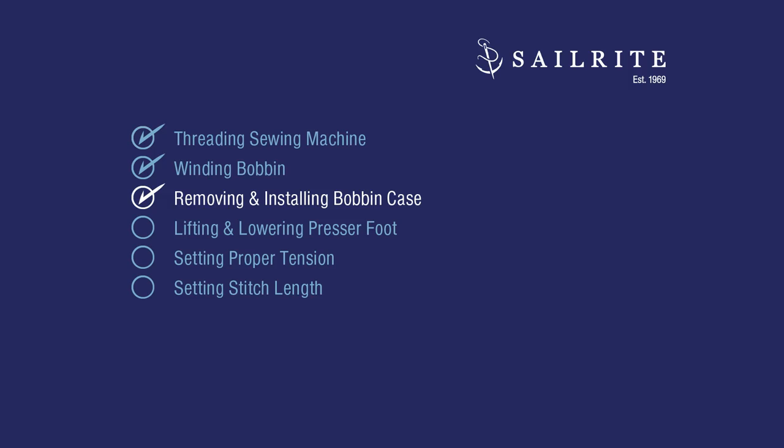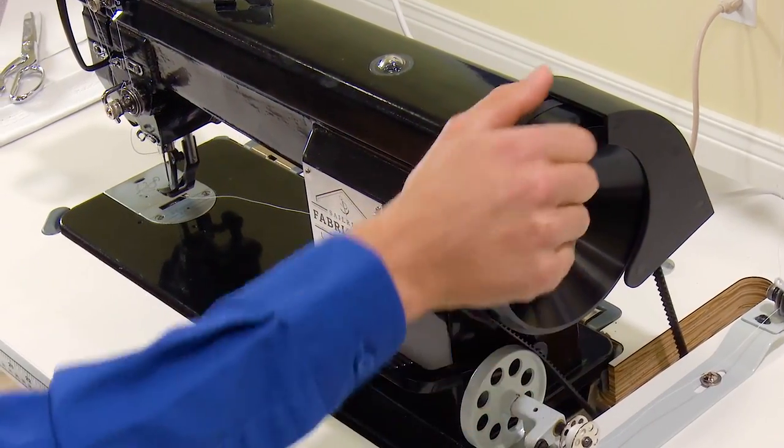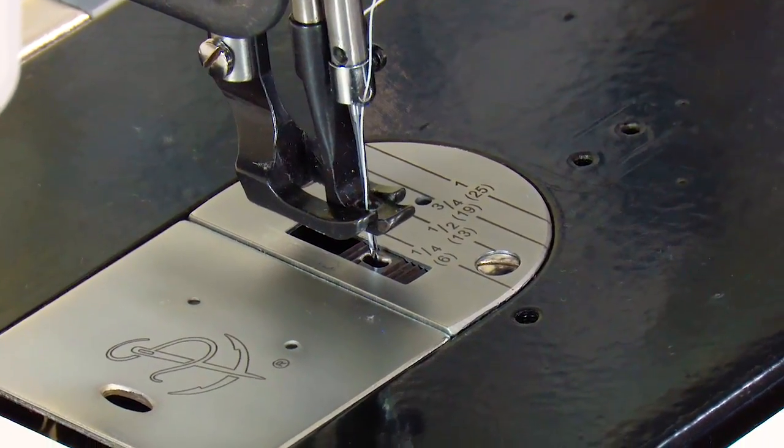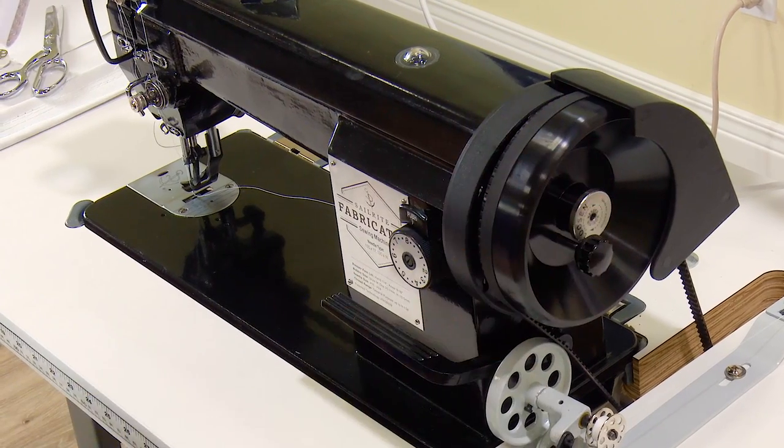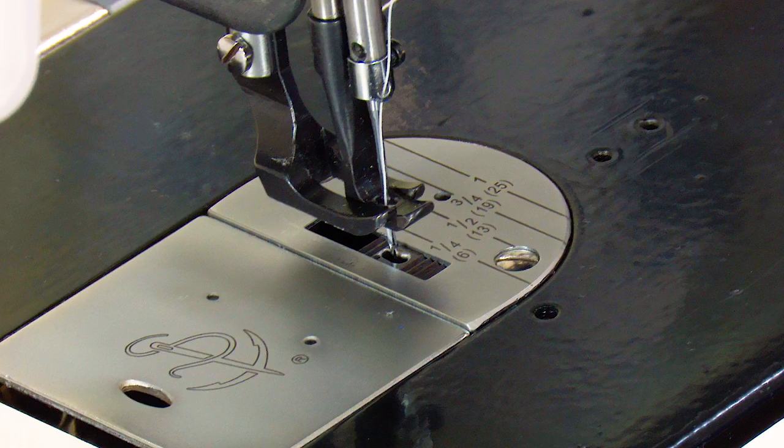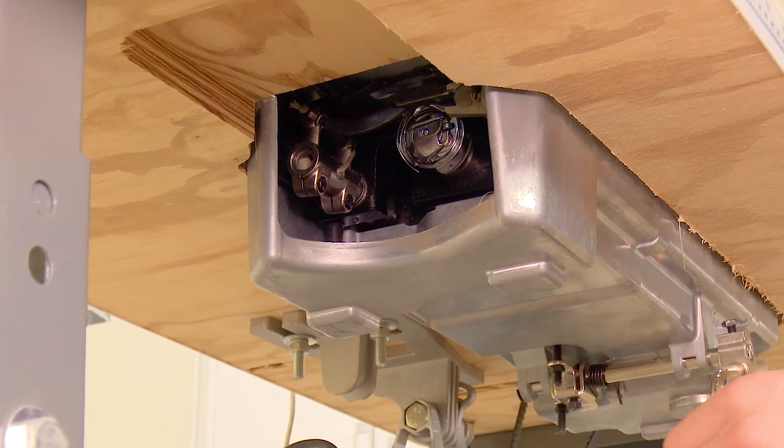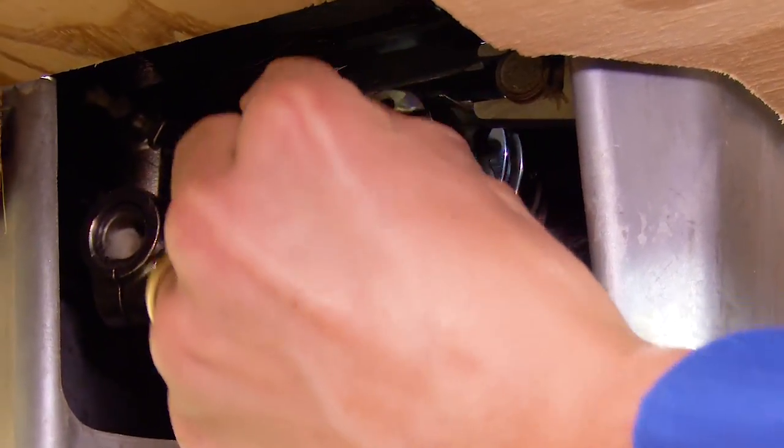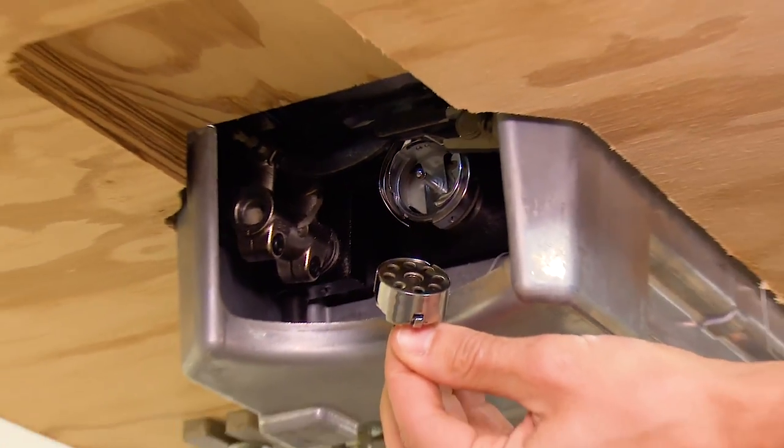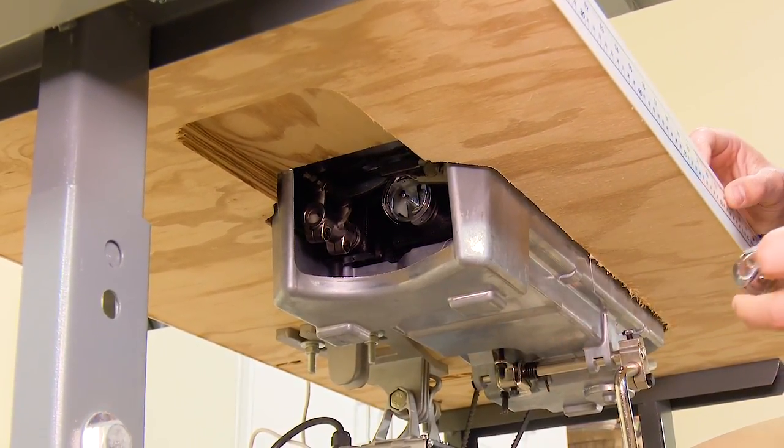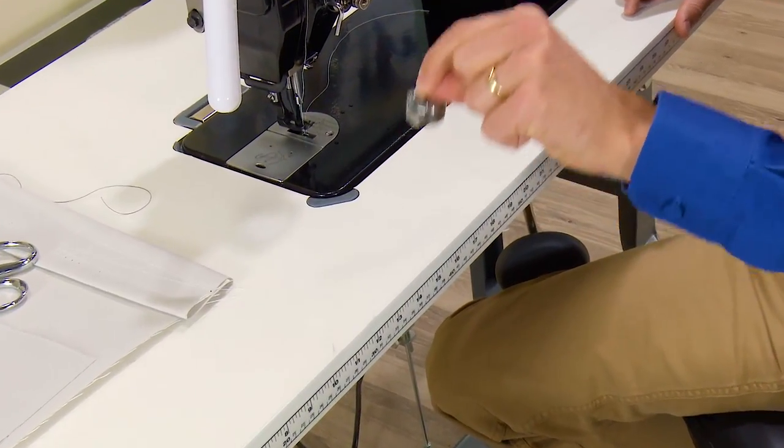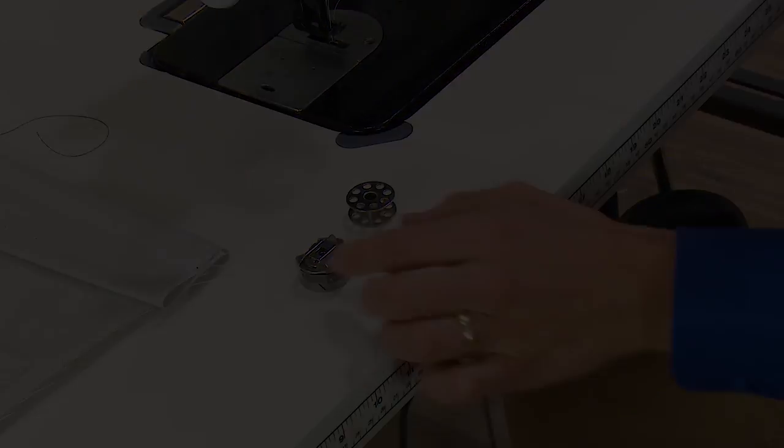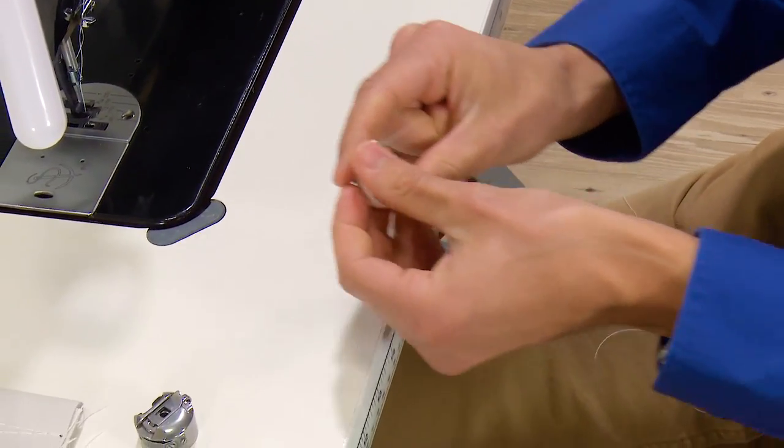Now it is time to concentrate on removing and installing the bobbin case. Rotate the balance wheel so the needle is about to enter the feed dog. Always rotate the balance wheel towards you, never away from you. With the needle at this position we can reach underneath the sewing machine through the access hole of the oil pan to reach the bobbin case. To remove the bobbin case lift the spring loaded lever and pull the bobbin case out. The lever locks the bobbin in its case. Release the lever and the bobbin will come out. We have already showed you how to wind the bobbin. Now we are going to take that bobbin and insert it in the bobbin case.